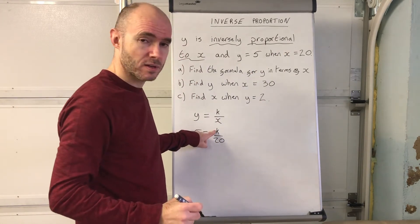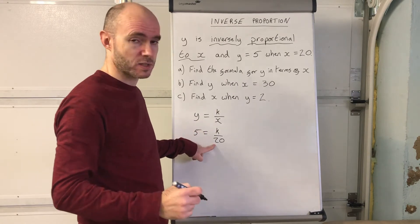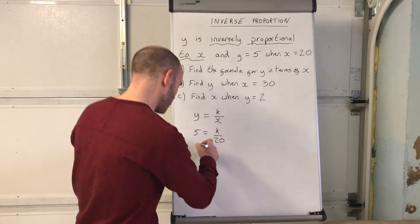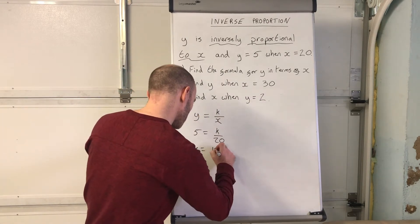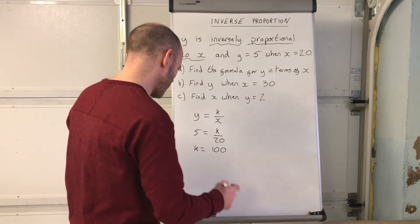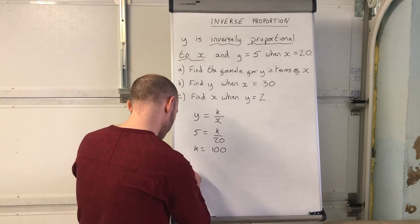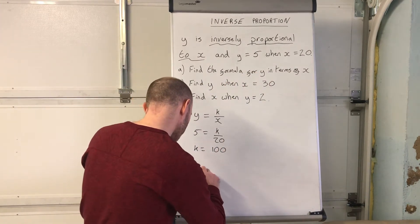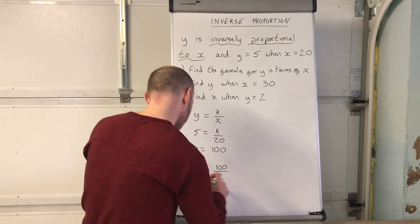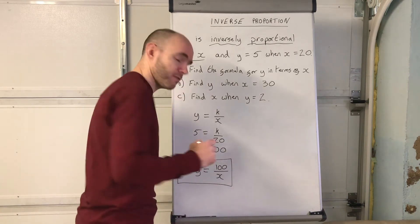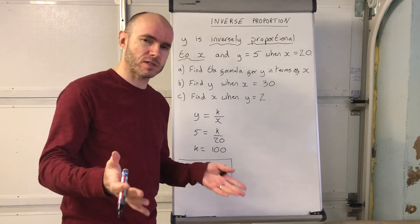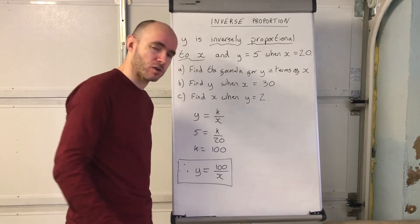You've got 5 equals k divided by 20. Multiply both sides by 20, and k equals 5 times 20, which is 100. Makes sense — 100 divided by 20 is 5. Therefore, the formula is y equals 100 over x. That's the formula I'm going to use to answer the rest of the question.